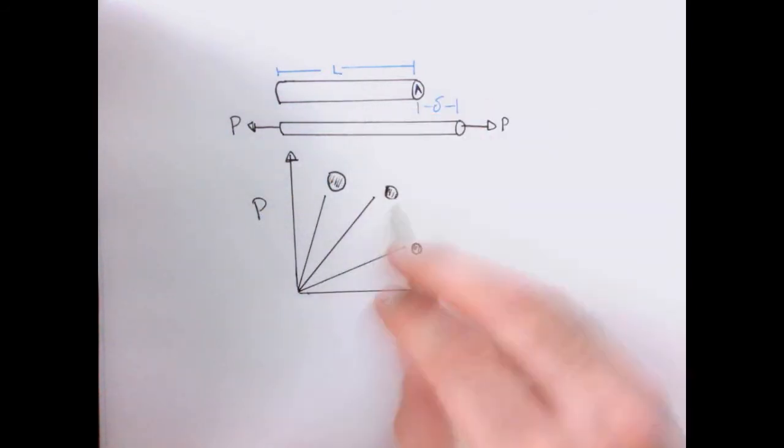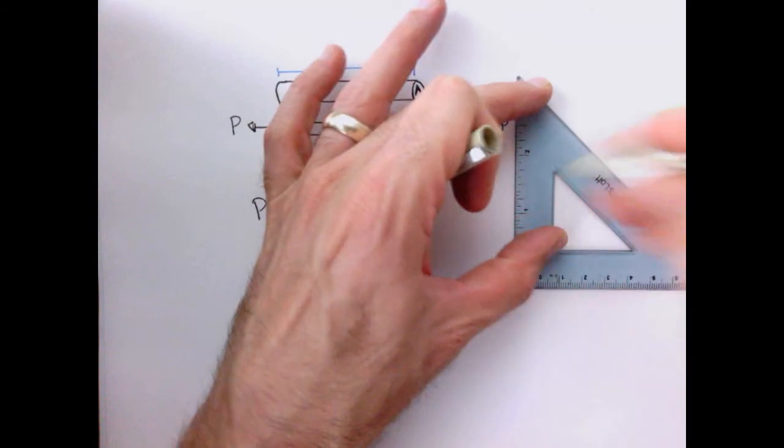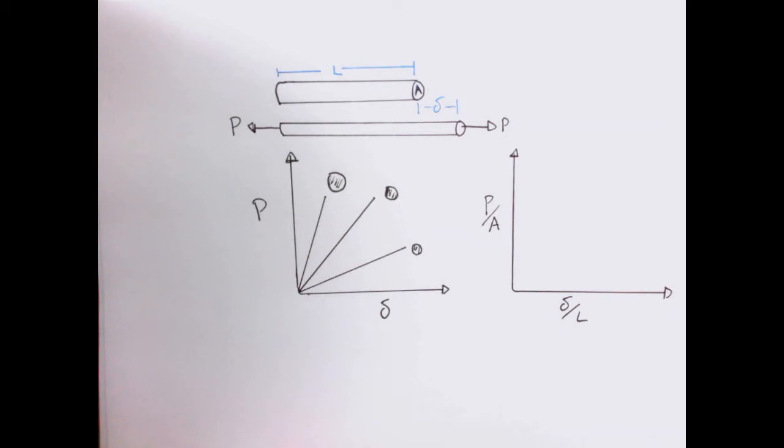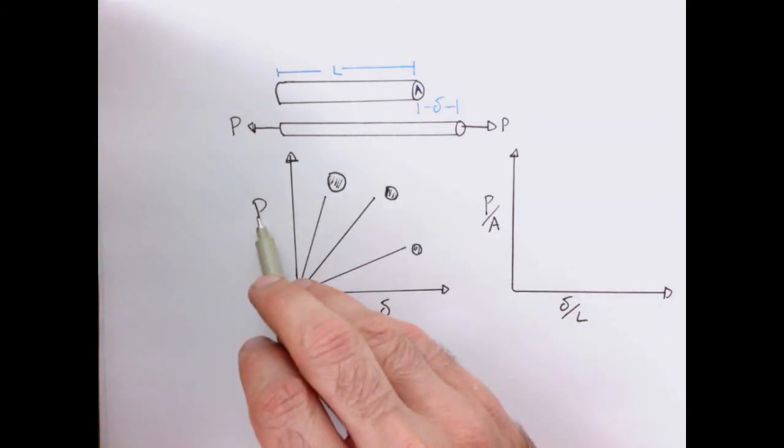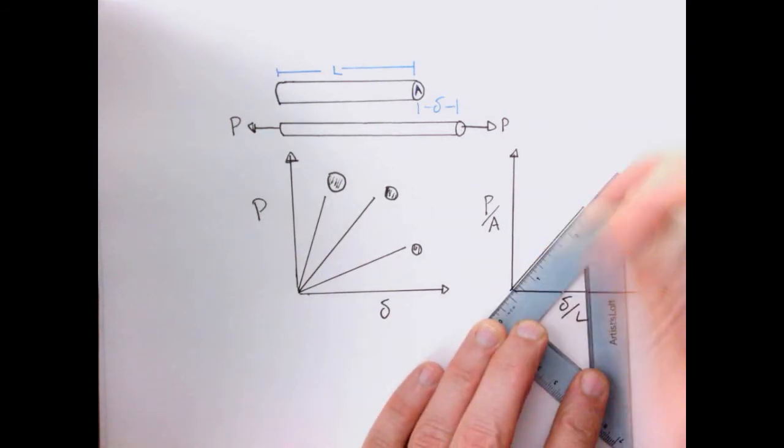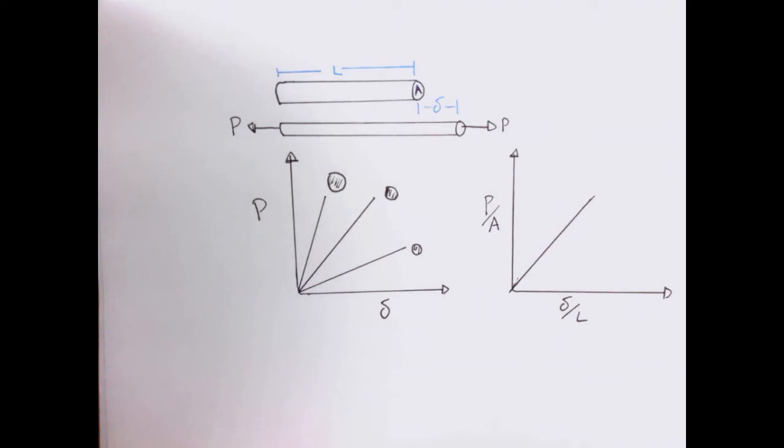So the way we discussed normalizing these effects out were to not use load and displacement, but stress and strain. And so when I generate the same plot, but now rather than plotting load, I plot load divided by area for these three experiments, they all fall on the same curve. And likewise, if I use different lengths, those would also fall on the same curve. So for a given material, if I plot stress versus strain, all the experiments collapse to a single curve, and the slope of the line here is called E, the elastic modulus or Young's modulus.